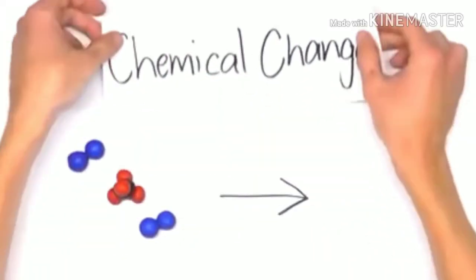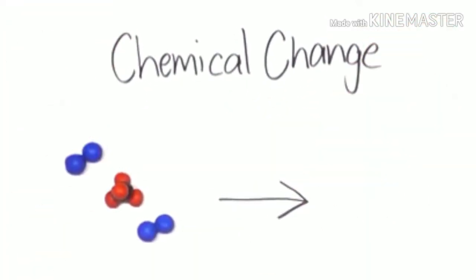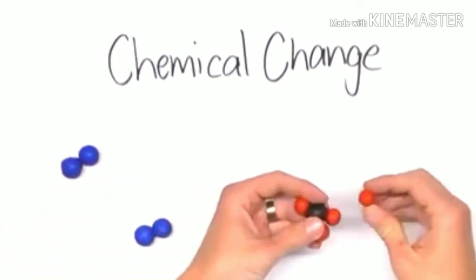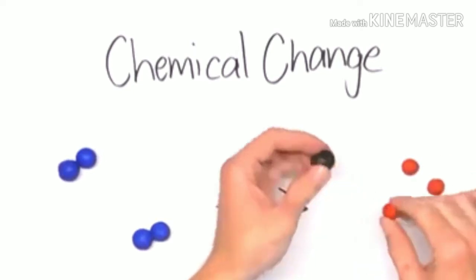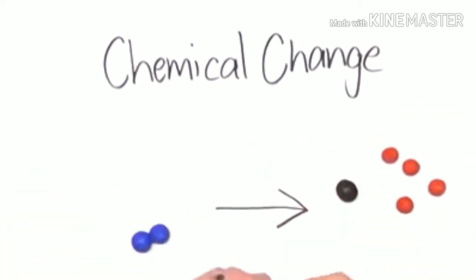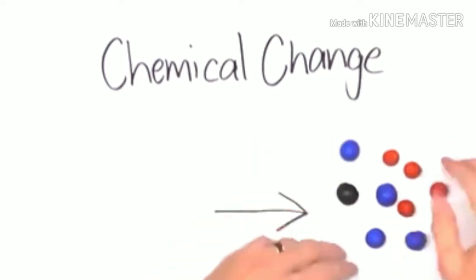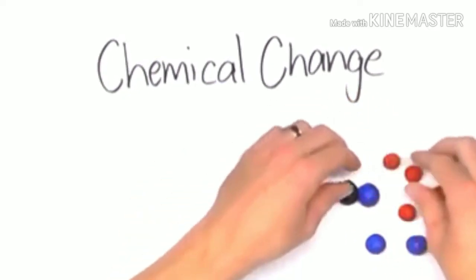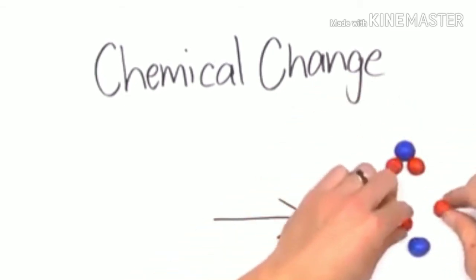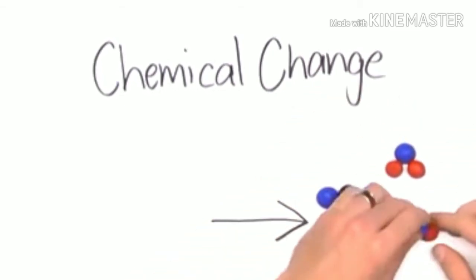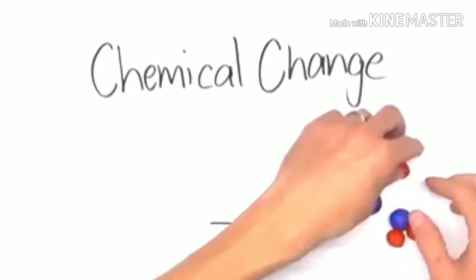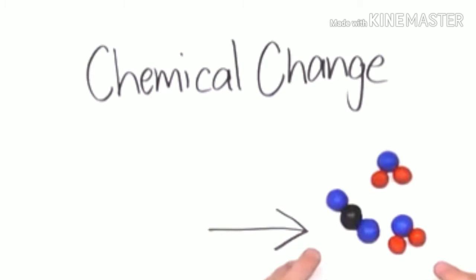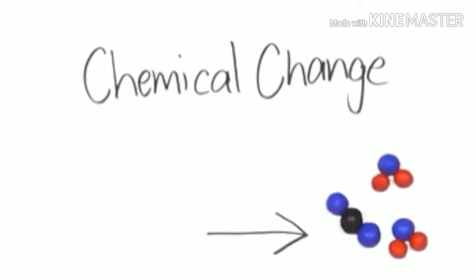A chemical change, or the second way that we can change molecules, is a little bit of a different story. Here, we actually break apart the previous molecular configurations and form brand new arrangements that weren't there when we started. With a chemical change, you're making brand new stuff. Unlike a physical change, with a chemical change you can't go back to the things you started with after the change has happened. Our experiment of turning pennies to gold and silver will be a chemical change.